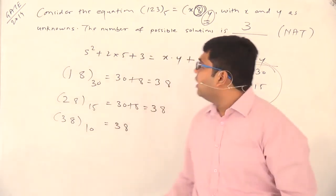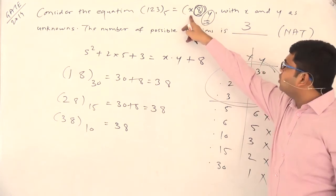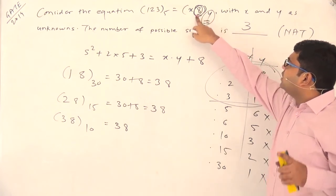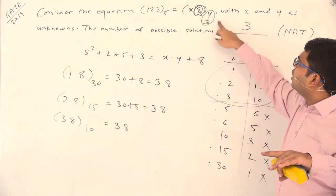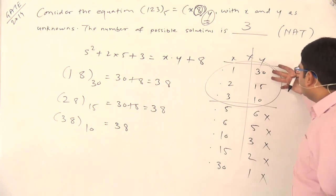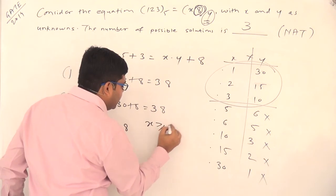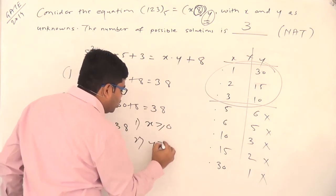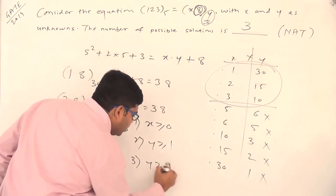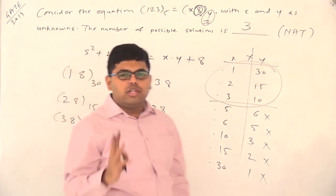So 3 solutions are possible and 3 is the correct answer. To summarize the conditions: x is a digit, so x ≥ 0; y is the base of a number system, so y ≥ 1; and the largest digit available is 8, so the smallest possible base is y ≥ 9. Taking all three conditions together, only 3 solutions are valid and all others become invalid.